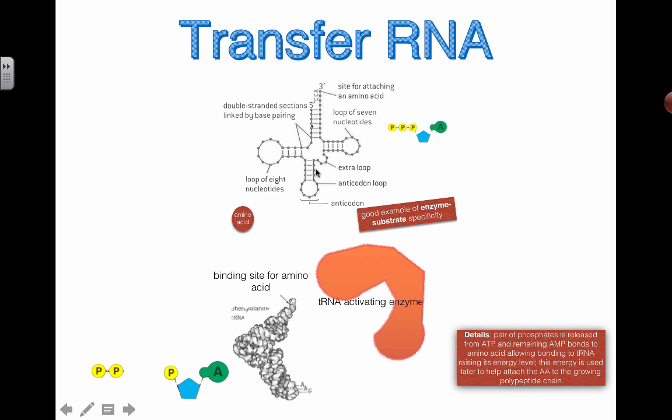These other sections here are just structural. No real functional things you need to understand about that, except that because this guy will have a specific shape based on the way that all these little loops are folding, it's only going to fit one specific tRNA activating enzyme. So let's take a look at some of the things that we just talked about and make sure we can understand.